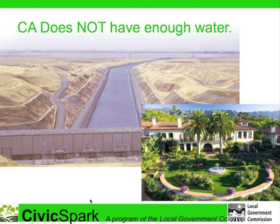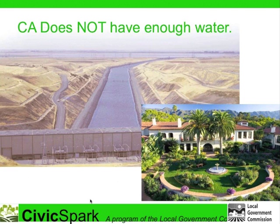The second most important thing you need to know about water is that we don't have enough of it. California is part of the arid west. We live in what's called a Mediterranean climate, which is characterized by hot, dry summers and moderate, wet winters. However, we in California like to live as if we are in the tropics. We use three times the average per capita water use as the national average, and about 15 times the global average for water use.